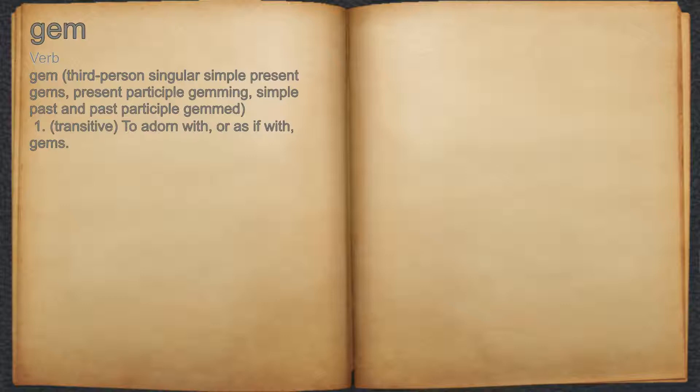Gem. Verb. 1. Transitive, to adorn with, or as if with, gems.